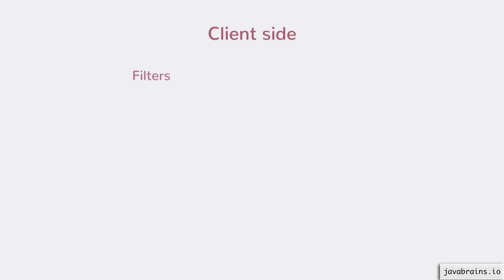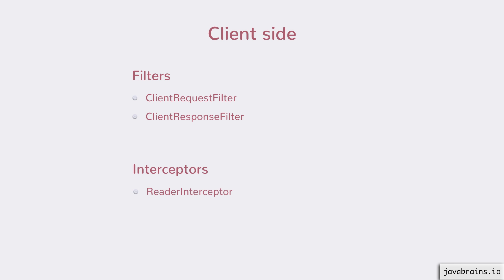On the client side, you have two types of filters — request and response — but these are not called container request filter and container response filter. On the client side, they become client request filter and client response filter. They do pretty much the same thing. When a request is sent out, the client request filter is invoked. And when the response is received from the server, the client response filter acts. We also have two interceptors: reader interceptor and writer interceptor. Another entity that works on the client side, which we've already seen for the server side, is the message body reader and writer.